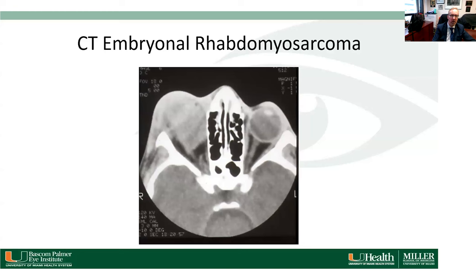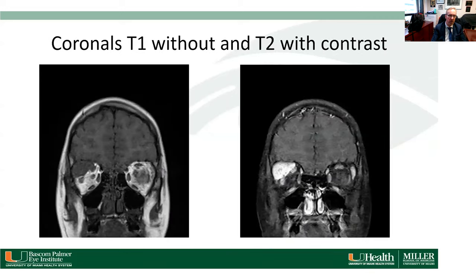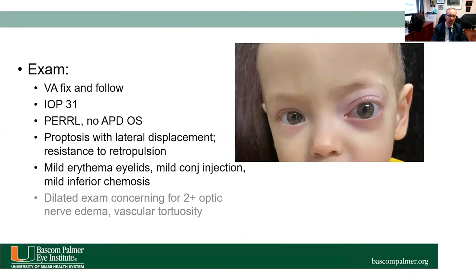On CT of an embryonal rhabdomyosarcoma, the tumor in its early stages usually does not erode bone — it interacts benignly with bone without erosion. It causes proptosis through mass effect, conforms to the shape of bone, and has a predilection for the superior orbit in the embryonal subtype. On coronal T1 and T2 with and without contrast, these tumors can enhance readily with contrast.